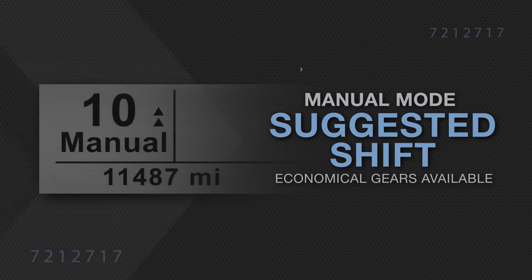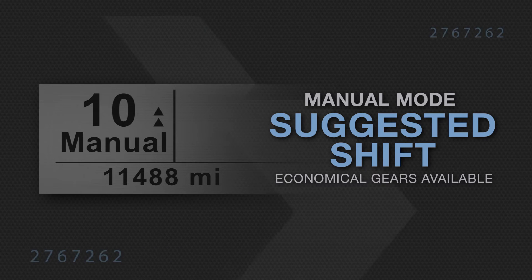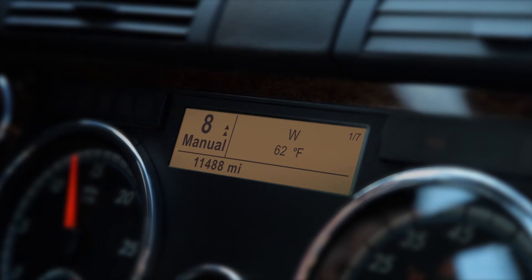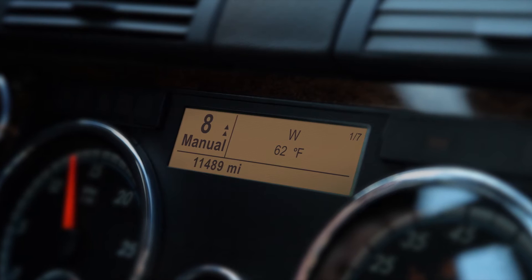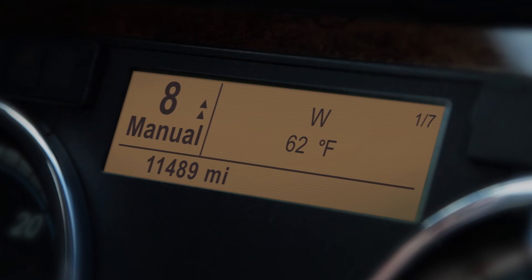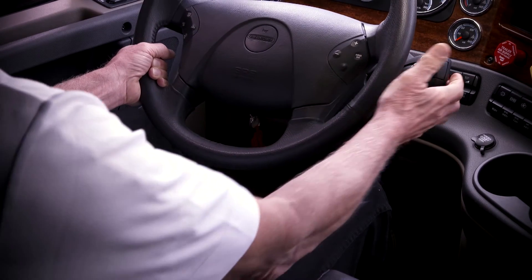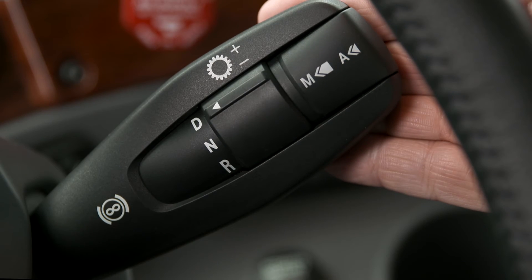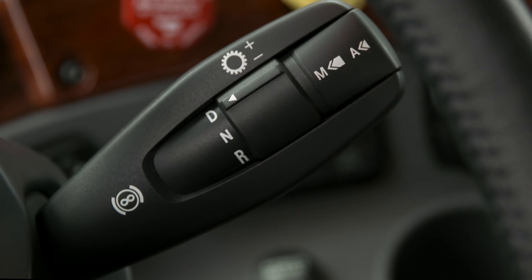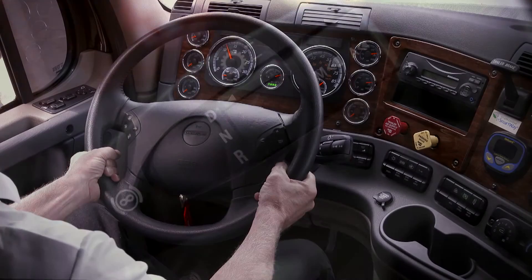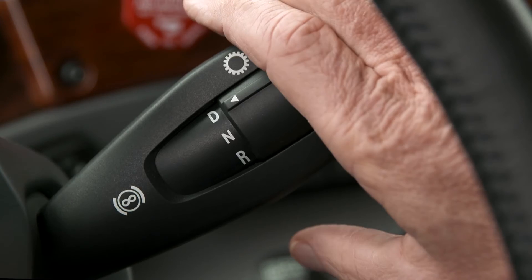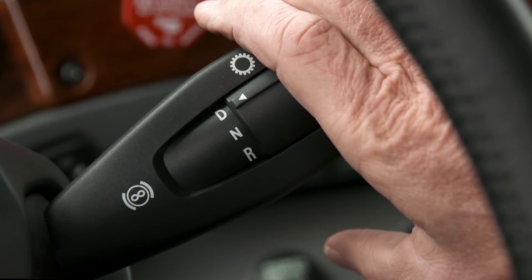In manual mode only, a suggested shift is displayed to indicate the most economical gear available. The suggested shift shows the number of up or down arrows from the current gear, with a maximum of two up or down arrows. If you have two up arrows on the dash, you can pull the shifter stock towards you and hold to upshift to the highest gear available. The same method can be used for downshifting in manual mode.